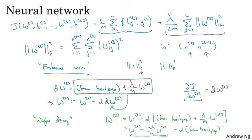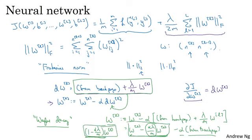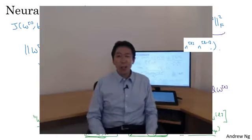So this term shows that whatever the matrix WL is, you're going to make it a little bit smaller. This is actually as if you're taking the matrix W and multiplying it by 1 minus alpha lambda over M. You're really taking the matrix W and subtracting alpha lambda over M times it. So it's like you're multiplying the matrix W by this number, which is going to be a little bit less than 1. This is why L2 norm regularization is also called weight decay, because it's just like ordinary gradient descent where you update W by subtracting alpha times the original gradient you got from backprop, but now you're also multiplying W by this thing, which is a little bit less than 1. So the alternative name for L2 regularization is weight decay. The intuition for why it's called weight decay is that this first term is equal to this, so you're just multiplying the weight matrix by a number slightly less than 1. So that's how you implement L2 regularization in a neural network.